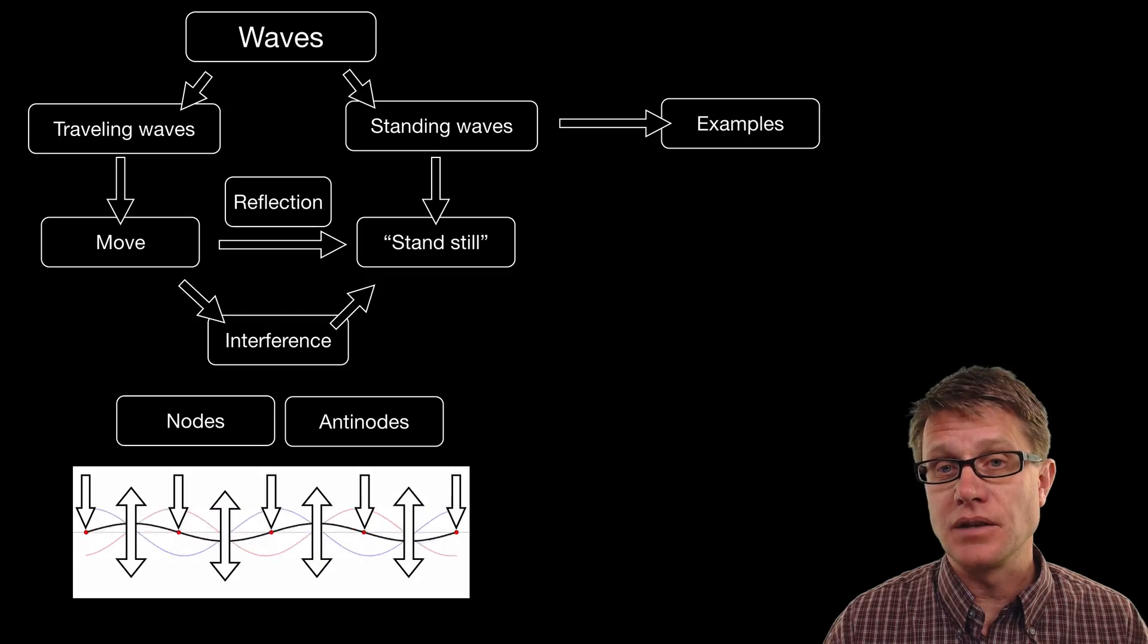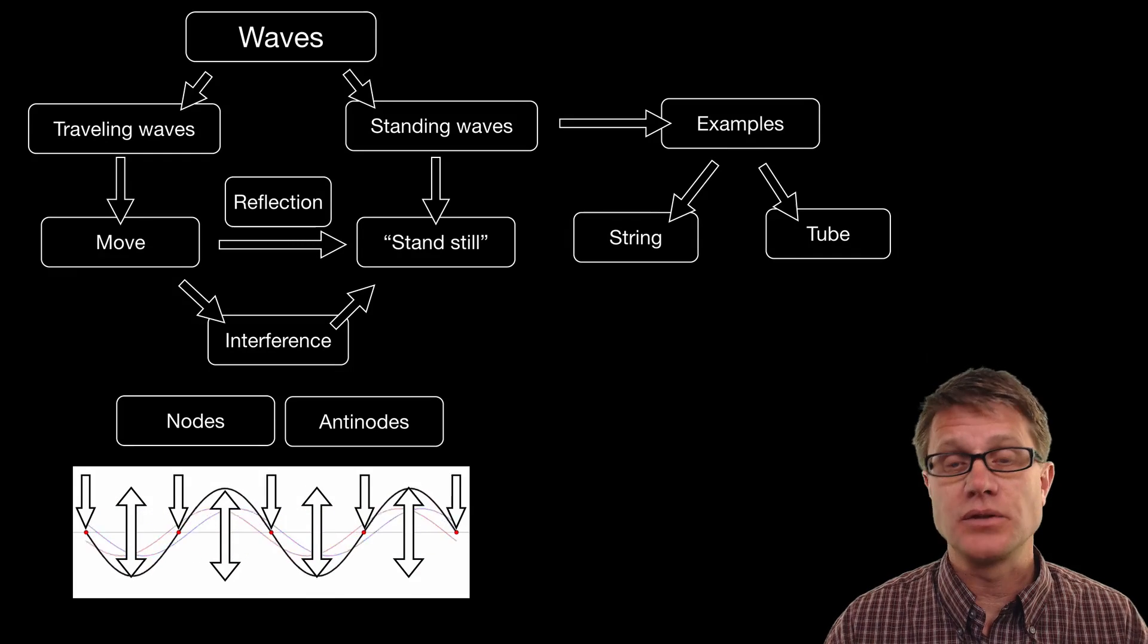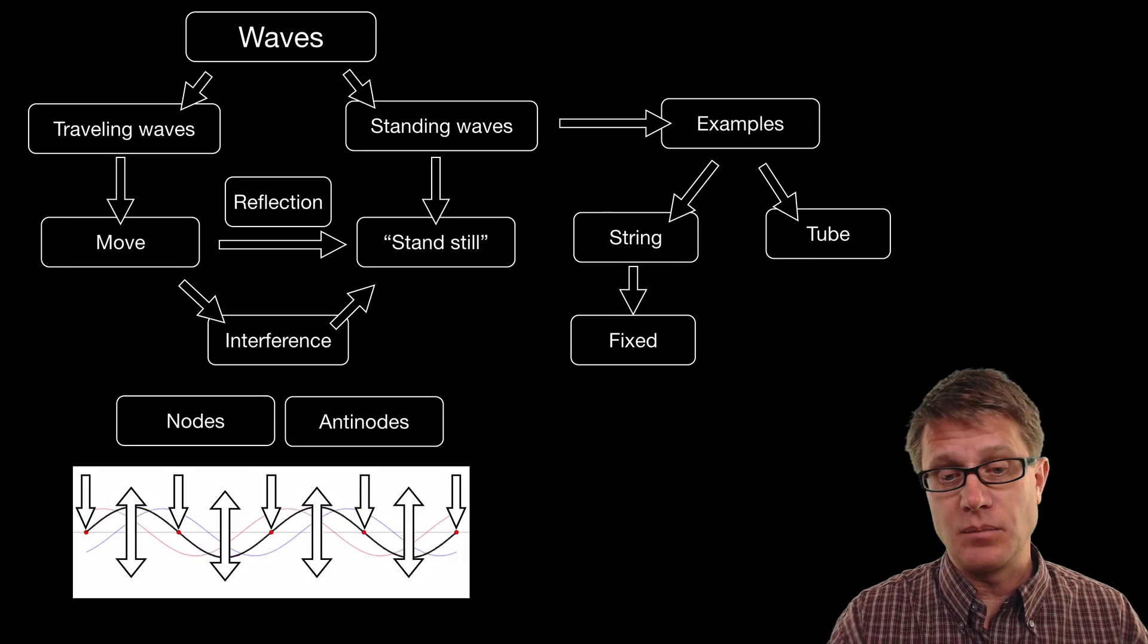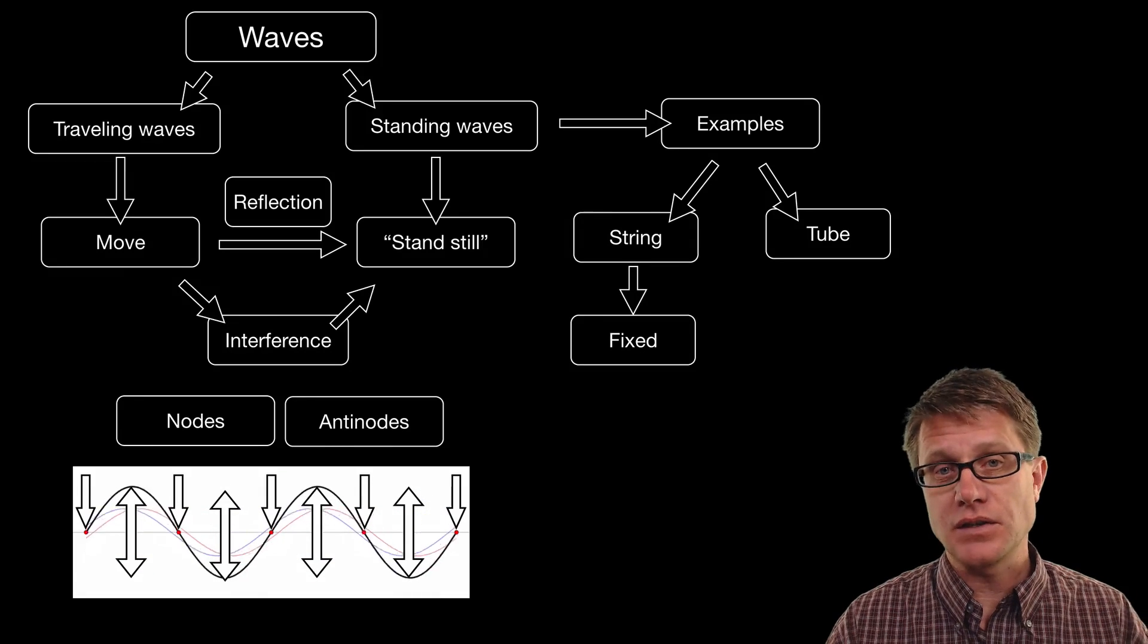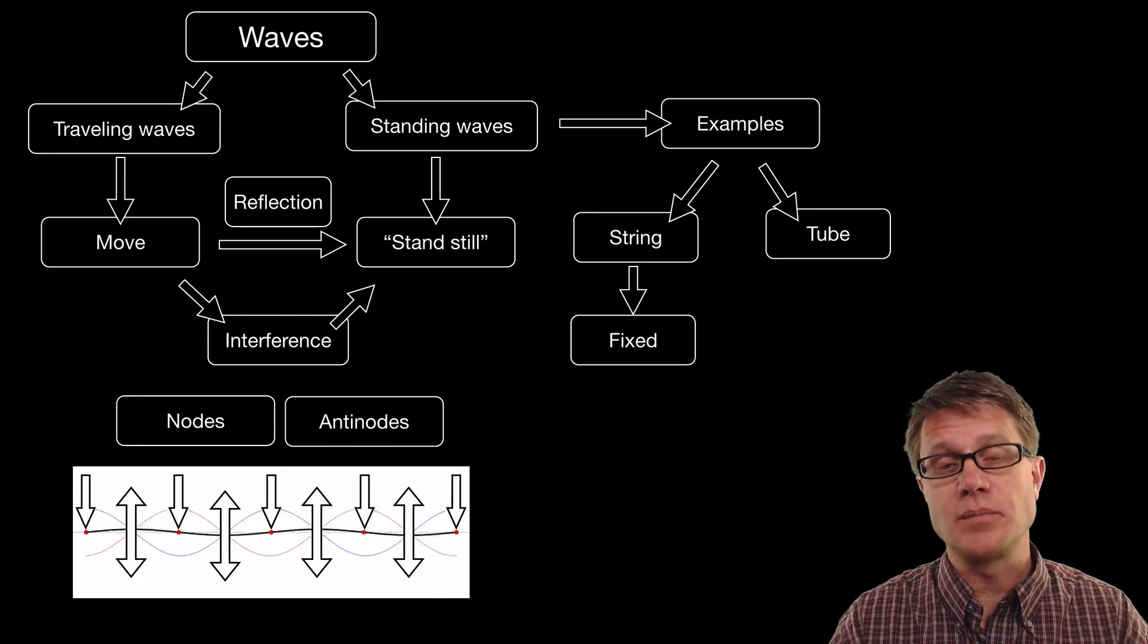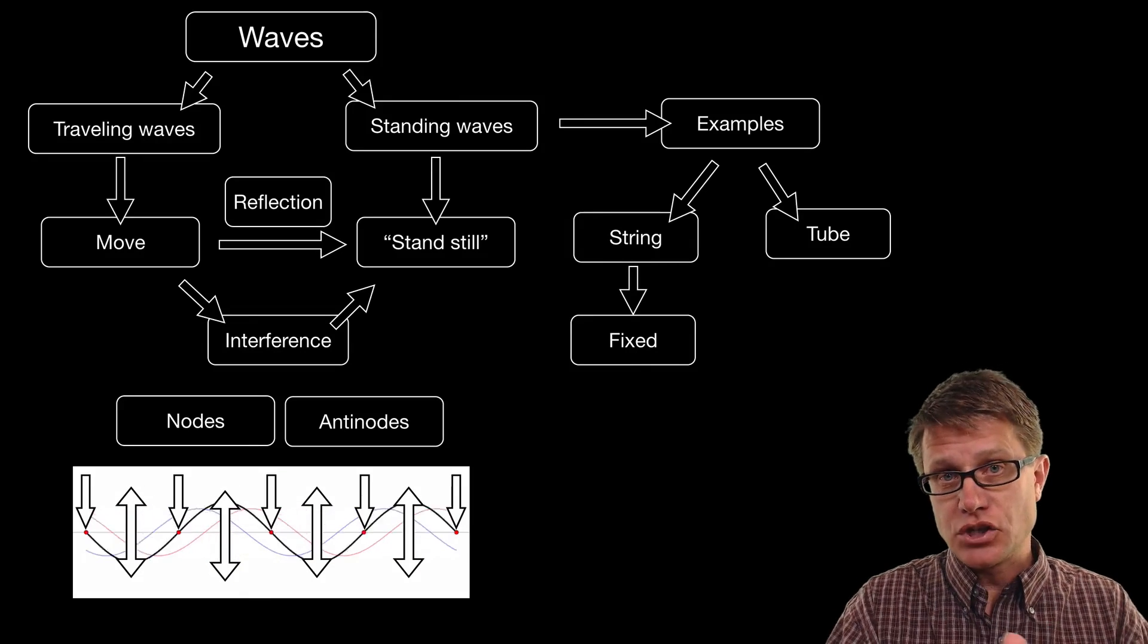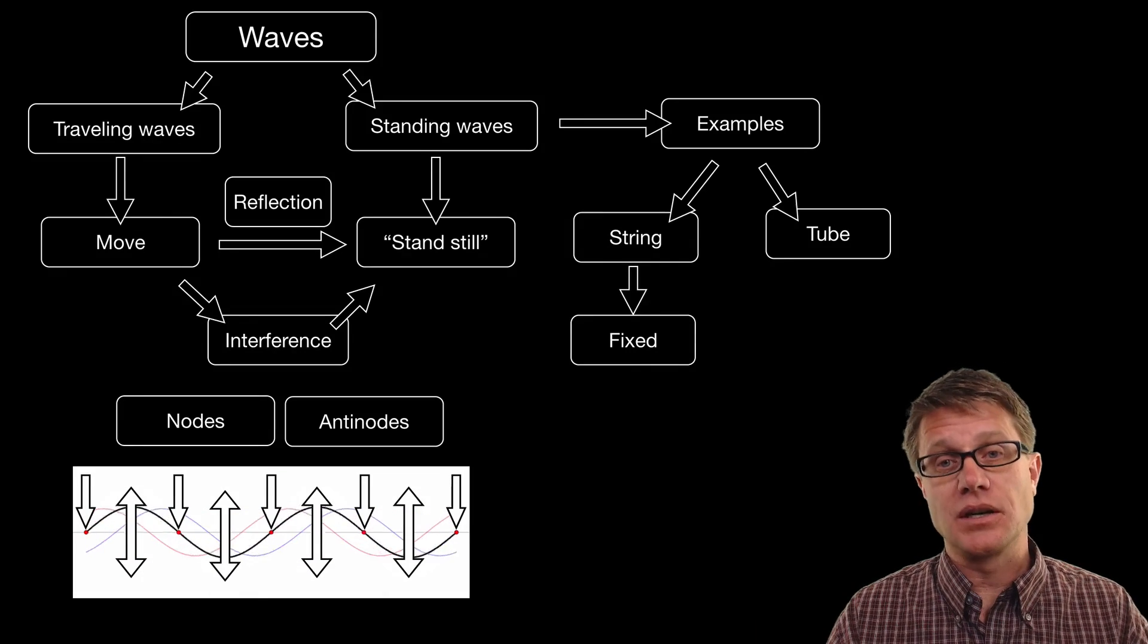And so an example of this could be found in instruments for example. So a string instrument is going to be fixed at either end. And this animation is a good example of that. It is fixed on either end. And as the waves bounce back and forth and back and forth you create these standing waves. If we shorten that, like on a guitar, then we can get different pitches.